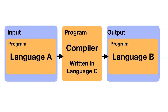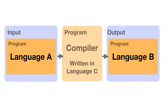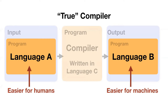People can disagree about how to use the words, and people will use a few different terms. A 'true compiler,' or more narrow definition, is when the input language is easy for humans and the output language is easier for machines. This is definitely what Grace Hopper was writing, and what a C compiler or a Rust compiler does. I think this is usually what people think of when they think of compiler — it's the oldest and most base case.